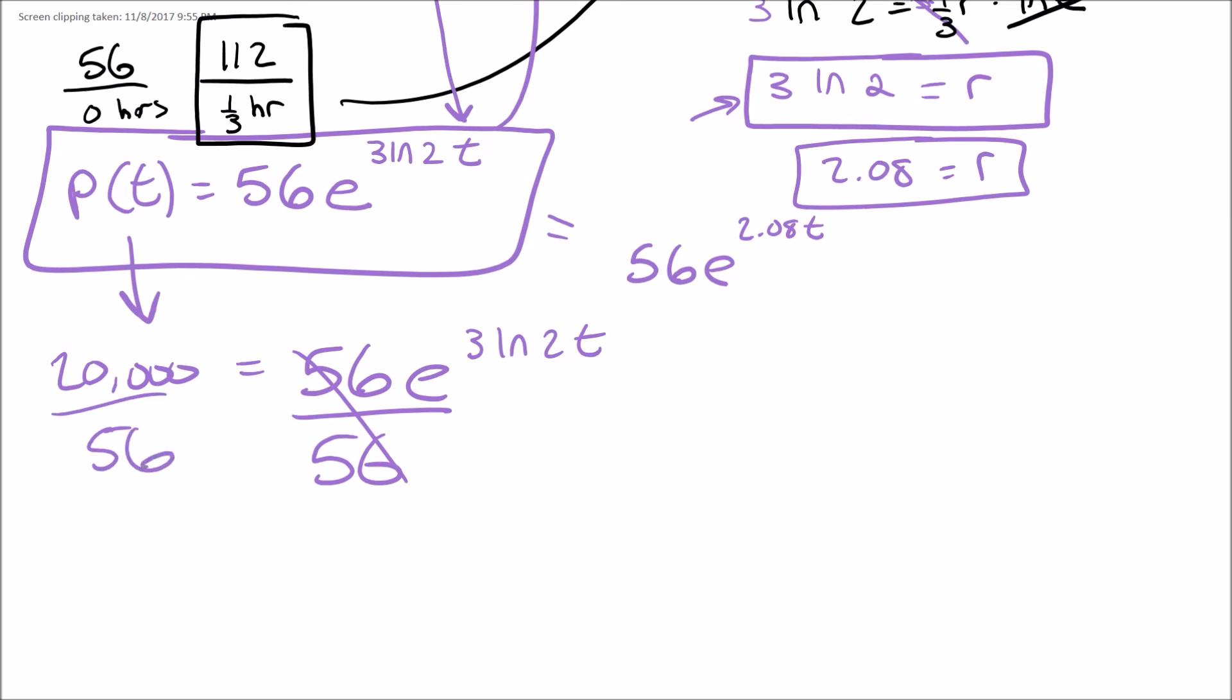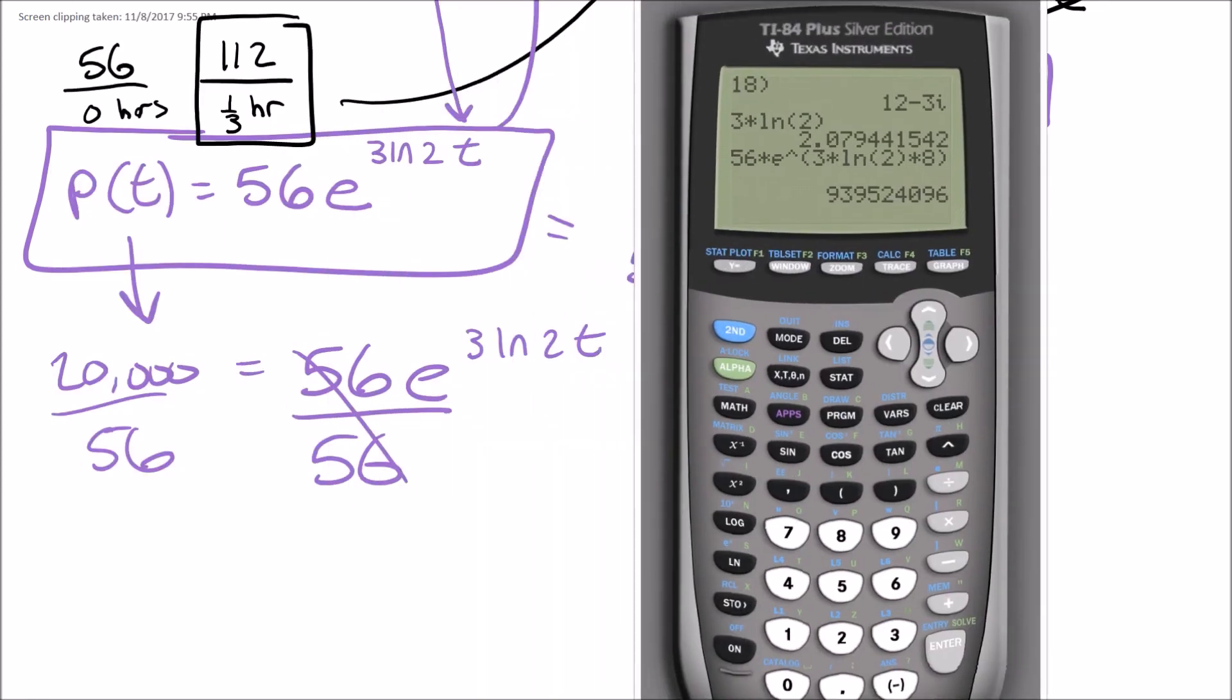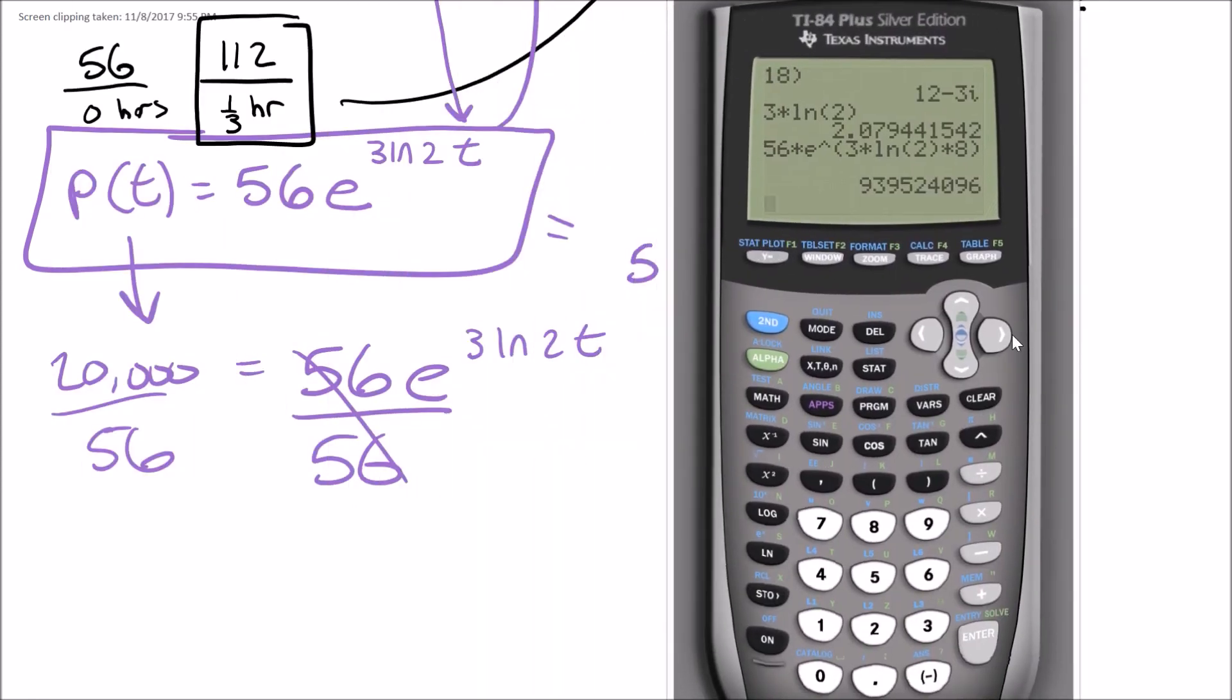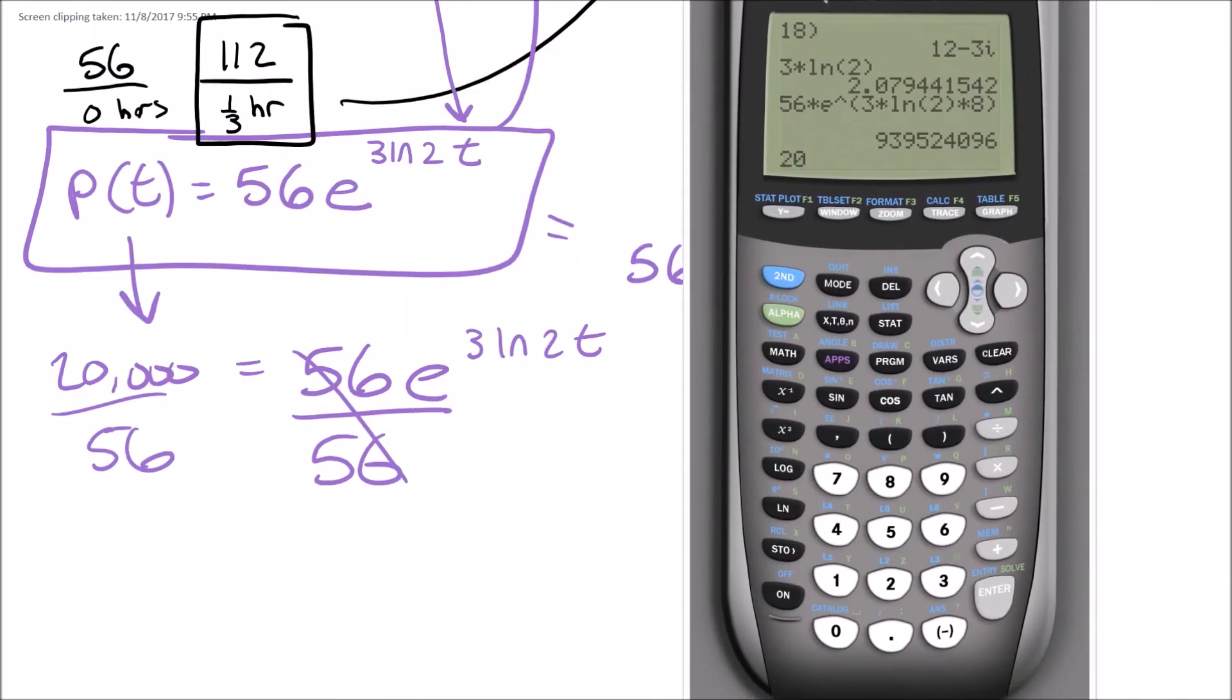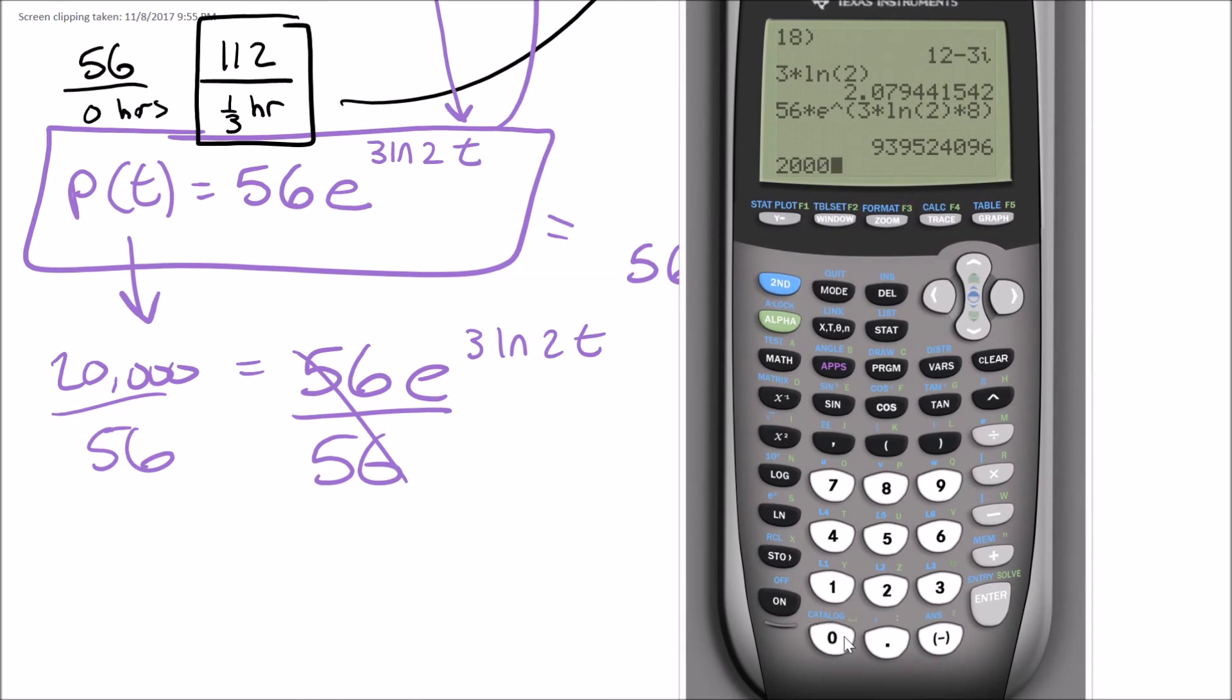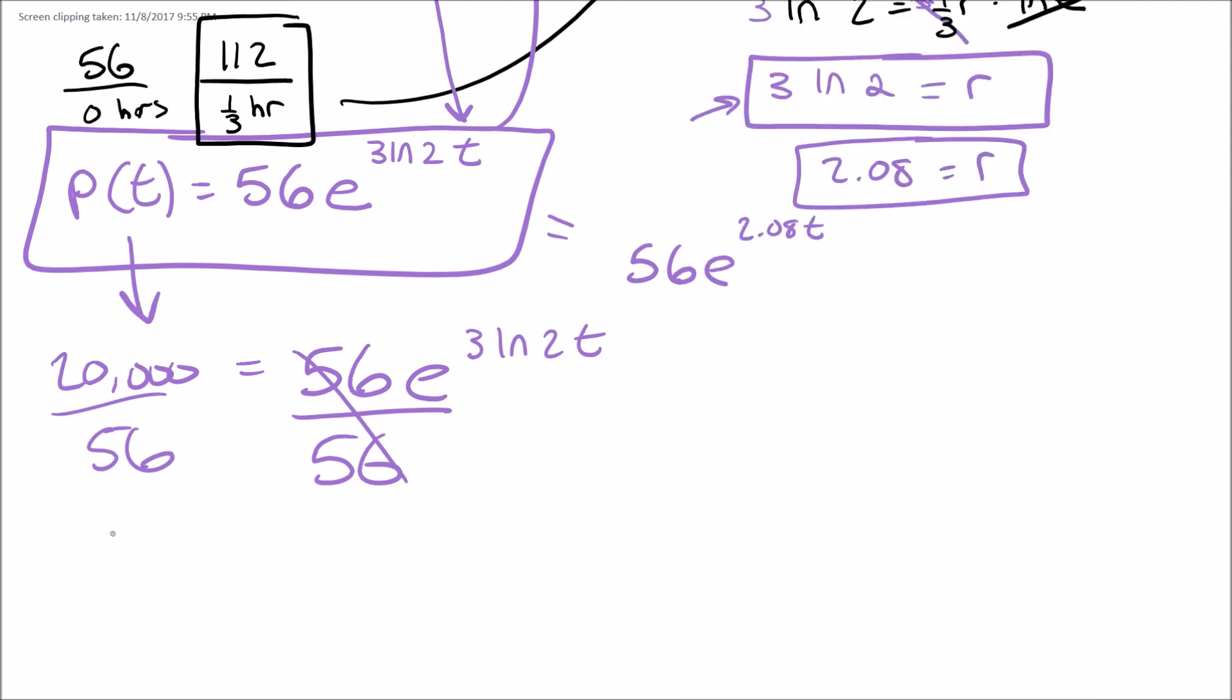So in order to get our main answer here, I'm going to divide both sides by 56. So we're going to do the 20,000 divided by 56, which gives us that number. So 357 point whatever. So 357.14 and then on this side we have e to the 3 ln of 2 raised to the t.